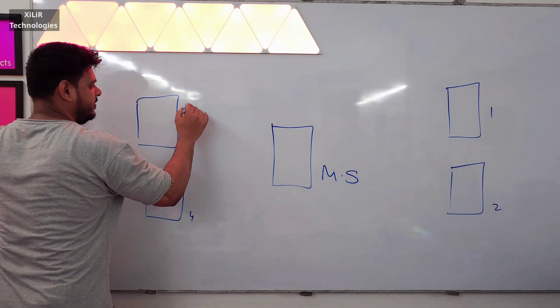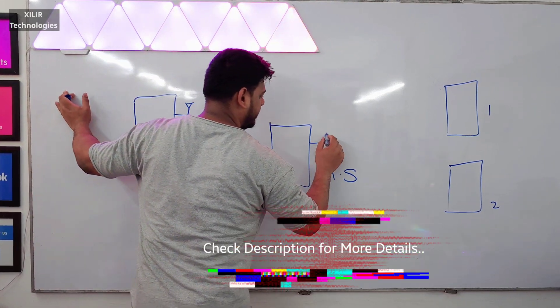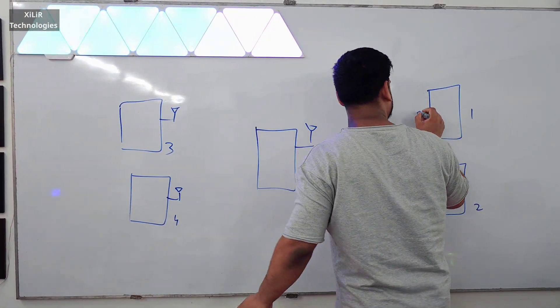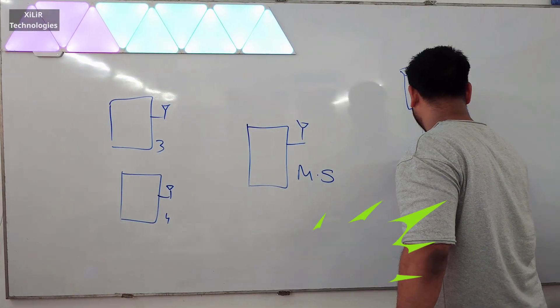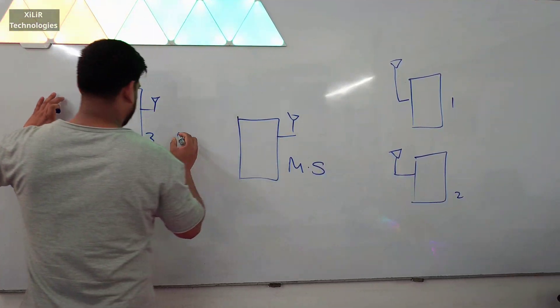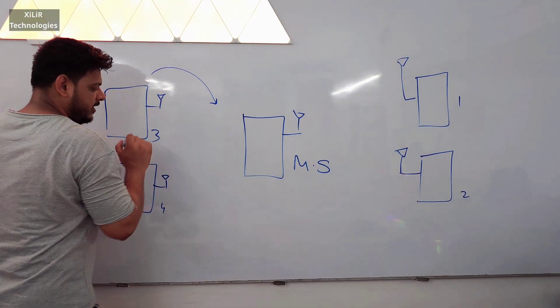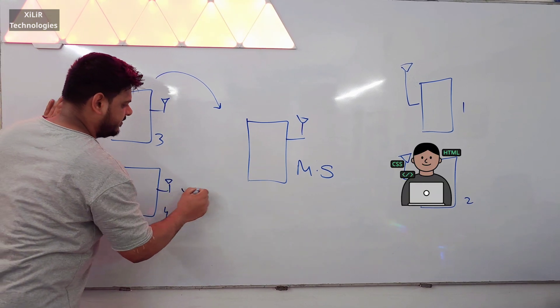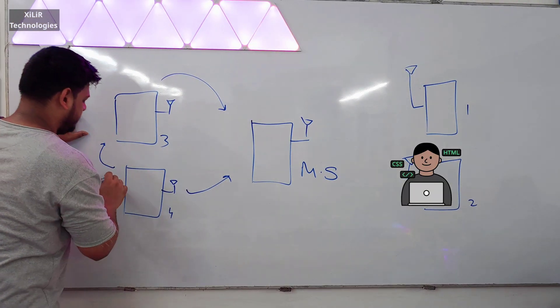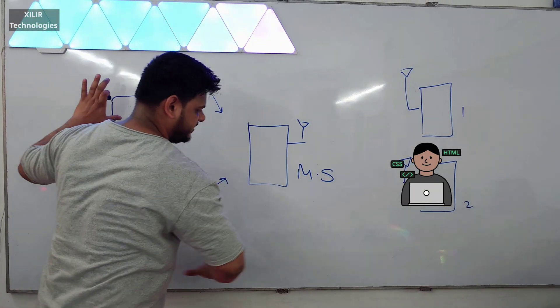Every device is connected with wireless modules. These devices are sending data to every device and then to the main station. Every device is connected with each other.